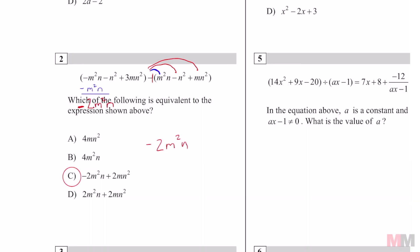So you don't have to distribute everything. You only had to do the first one and know that you're going to have to combine like terms with that first term and if you do that it saves you a lot of time and there's not a lot of time to waste on the SAT.